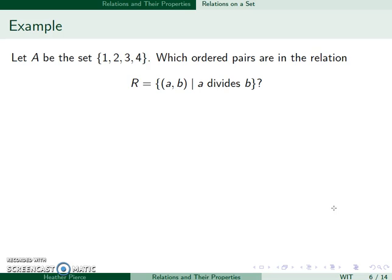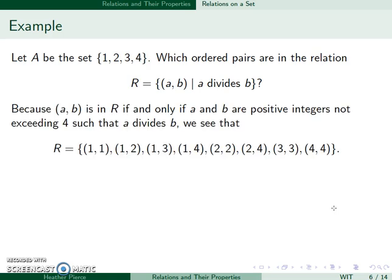Well, we can start with 1. 1 divides into itself, divides into 2, 3, and 4. 2 will divide into 2 and 4. 3 divides into 3, and 4 divides into 4. So we have this set of ordered pairs.